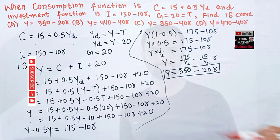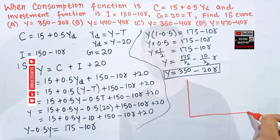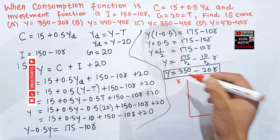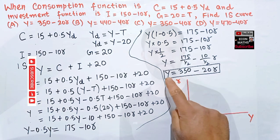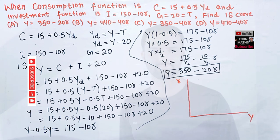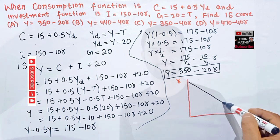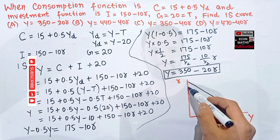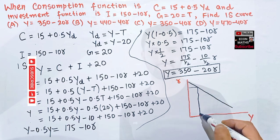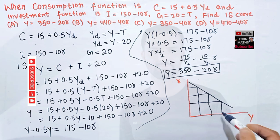Let us draw the graph. We place the level of GDP or income on the horizontal axis and the rate of interest on the vertical axis. Since income is a negative function of the rate of interest, the IS curve has a negative slope.